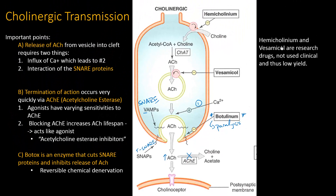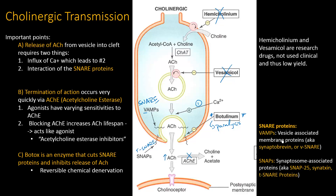Hemicolinium and vesamicol are not drugs used clinically — they're research drugs. The boards have enough clinically relevant material to test you on, so these aren't worth mental space; they may appear as answer choices but won't be the correct answer. As a note, the two T-snare proteins are SNAP25 and syntaxin.